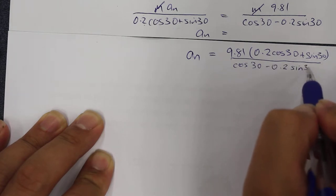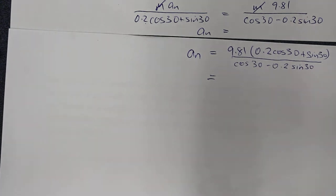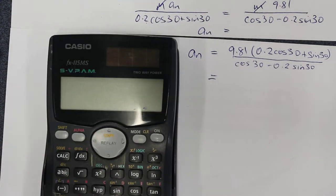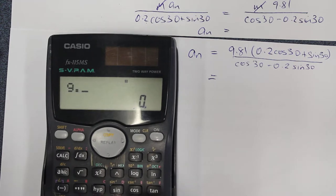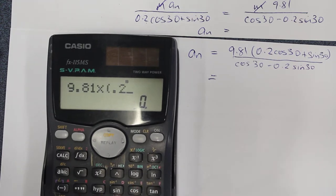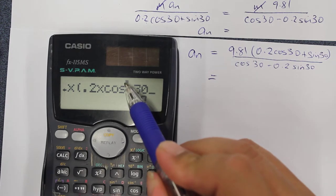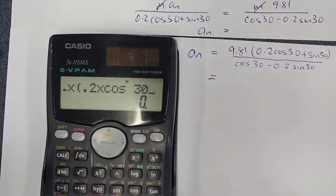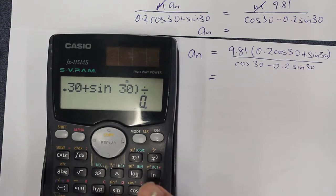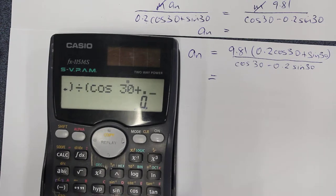We'll just enter that into a calculator. By the way, if you own this calculator just let me know. 9.81 times 0.2 times cosine of 30, just checking that I'm in the degrees angle measurement here, plus sine 30.